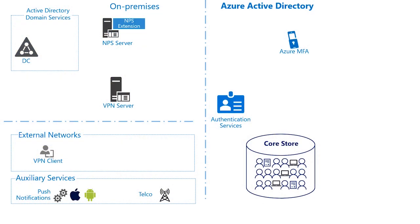Here we have a typical scenario where a customer has deployed their VPN network access services using Radius, and they have decided they want to provide additional controls by using the Azure MFA feature of Azure Active Directory. In this scenario, the user is wanting to connect to the corporate network via VPN.